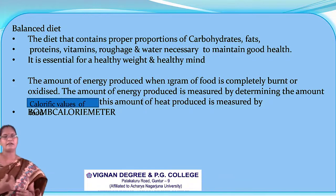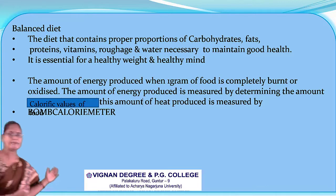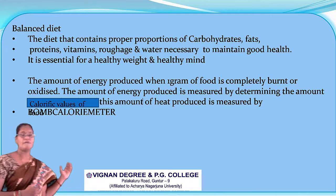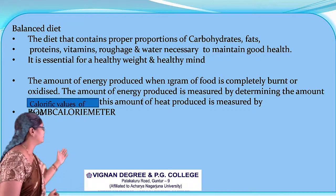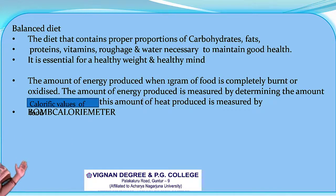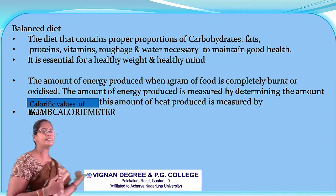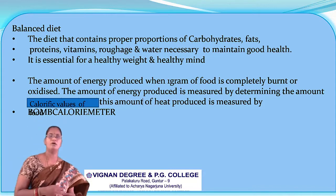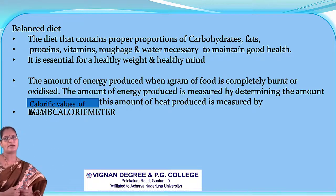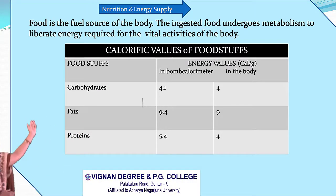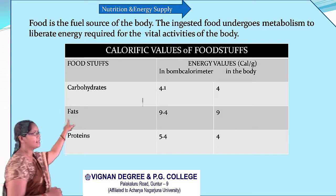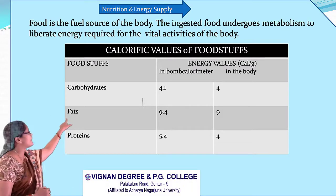The food we ingest undergoes metabolism in our body and liberates energy. This energy is used for maintenance of growth, maintenance of body tissues, and regulation of body activities. The amount of energy liberated by complete oxidation of a food material in the body is called the calorific value of that food. For example, carbohydrates liberate 4 kilocalories of energy.